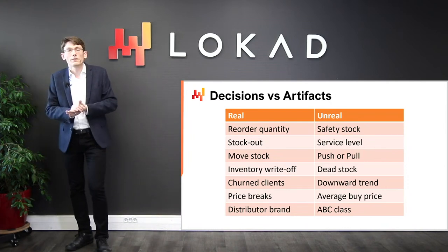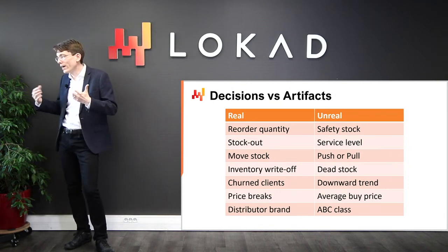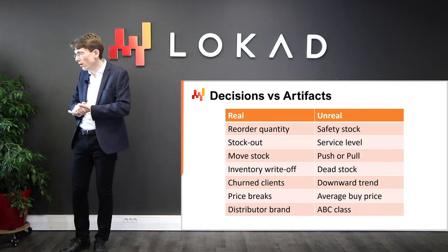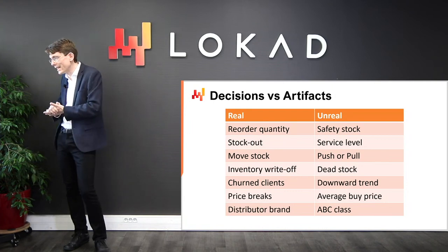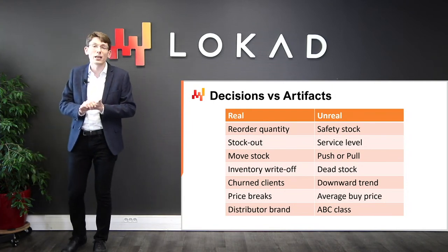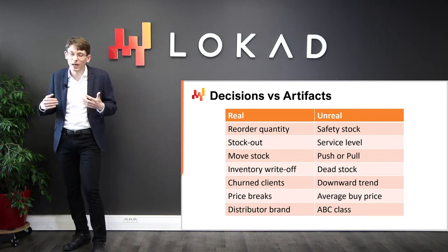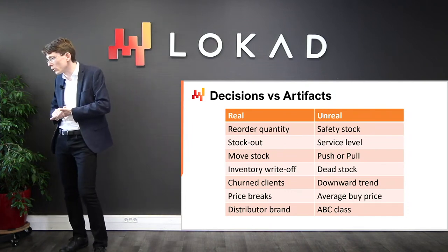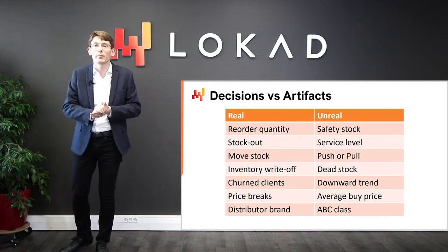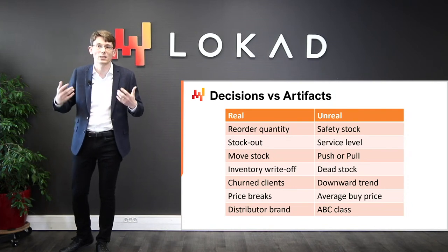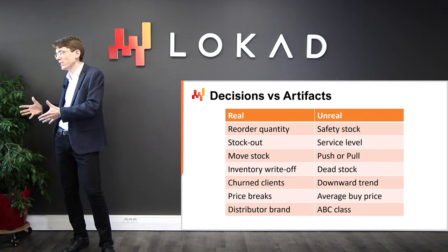Unfortunately, I can't help but observe a great deal of confusion in the supply chain literature when it comes to distinguishing decisions from artifacts. Beware: returns on investments are exclusively obtained through the improvement of decisions. Improving artifacts is almost always quite inconsequential at best, and at worst, if a company spends too much time improving artifacts, this becomes a distraction that actually prevents the company from improving its actual supply chain decisions.